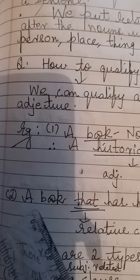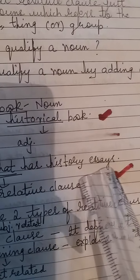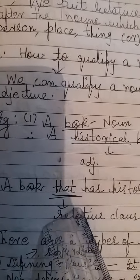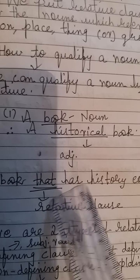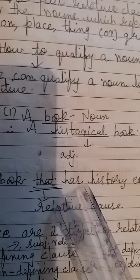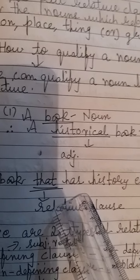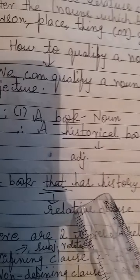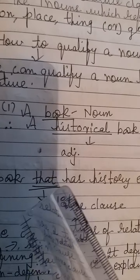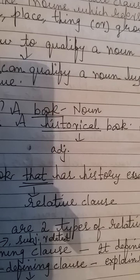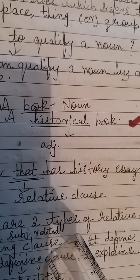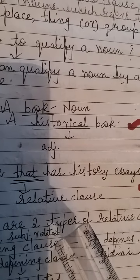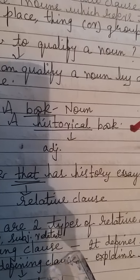Example number 2: 'a book that has history essays.' The relative clause here is 'that.' A relative clause is nothing but an adjective clause. It starts with WH-question words like who, what, where, when, and which.